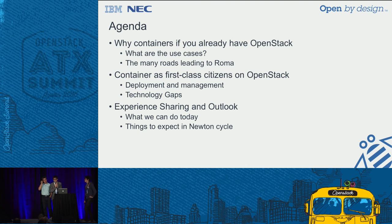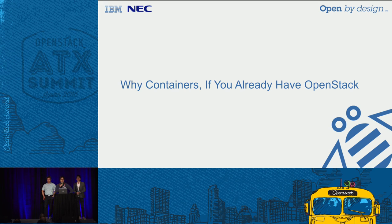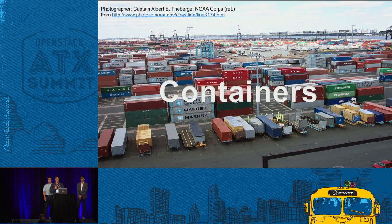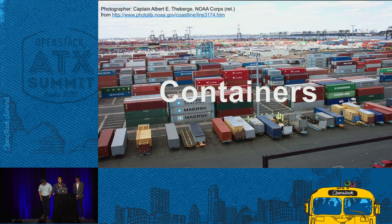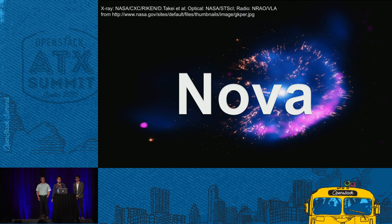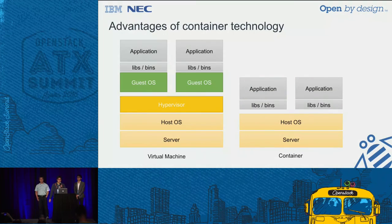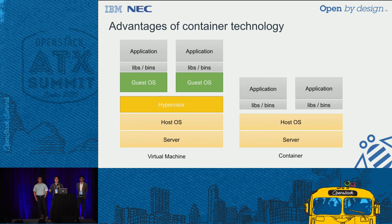Let's introduce why containers if you already have OpenStack. Container is a type of virtualization technology, and we can use containers as a computing resource. OpenStack already has Nova, which is an abstraction layer of computing resources. Nova handles virtual machines and provides an abstraction layer for managing them. So if a container is a type of virtual machine, why use containers if you already have OpenStack?